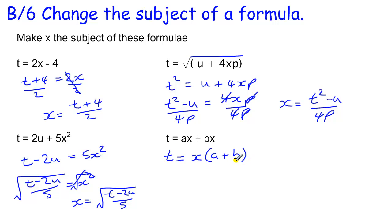And now I can just divide by that a plus b, because this is x times a plus b. So if I divide by a plus b, I can find x on its own. So x equals t over a plus b.